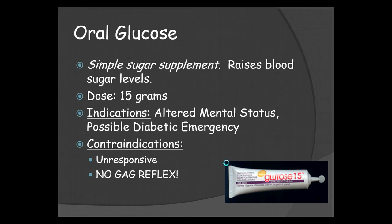Oral glucose is a simple sugar supplement that raises blood sugar levels. The dose is 15 grams — every tube is 15 grams of simple sugar. These can be obtained at any pharmacy or drugstore, however in your case they'll be in your medication bag. Indications are altered mental status or possible diabetic emergency as indicated and verified by a D-stick or Accu-Chek. Contraindications are an unresponsive patient and no gag reflex — if your patient doesn't have a gag reflex, they stand the chance of aspiration, which could lead to cardiac arrest.